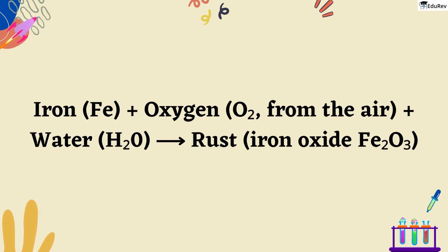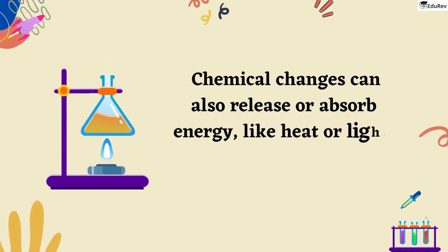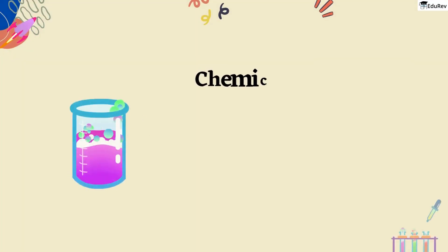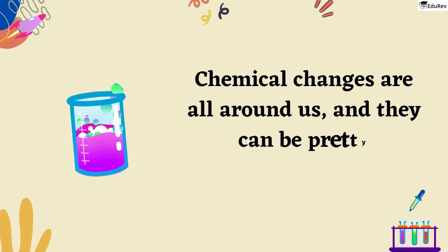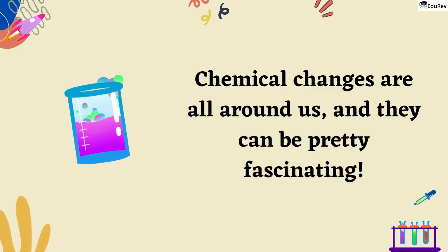But rusting is just one example of a chemical change. Chemical changes can also release or absorb energy, like heat or light, which can be pretty cool to observe. Just imagine seeing a chemical reaction create a bright flash of light or a burst of heat. It's like a mini-explosion right in front of your eyes. Students, chemical changes are all around us, and they can be pretty fascinating. So let's explore some more exciting ones.